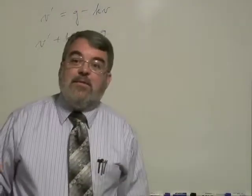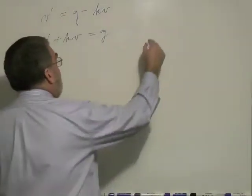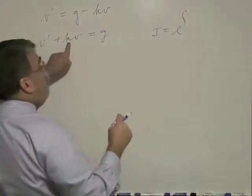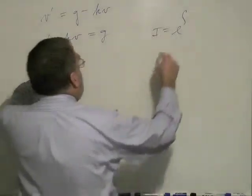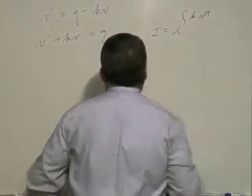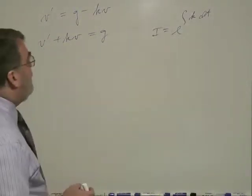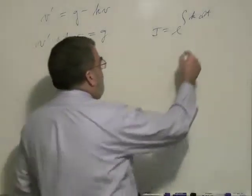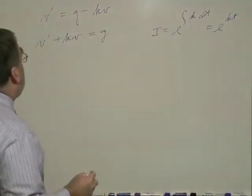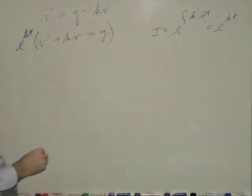And that's one of those types that we solve by applying the integrating factor, where the integrating factor is e to the integral of the coefficient of my variable, which is a constant k. So e to the integral of k dt. Since t is the independent variable of my function velocity, it's the time variable. So my integrating factor is e to the kt.